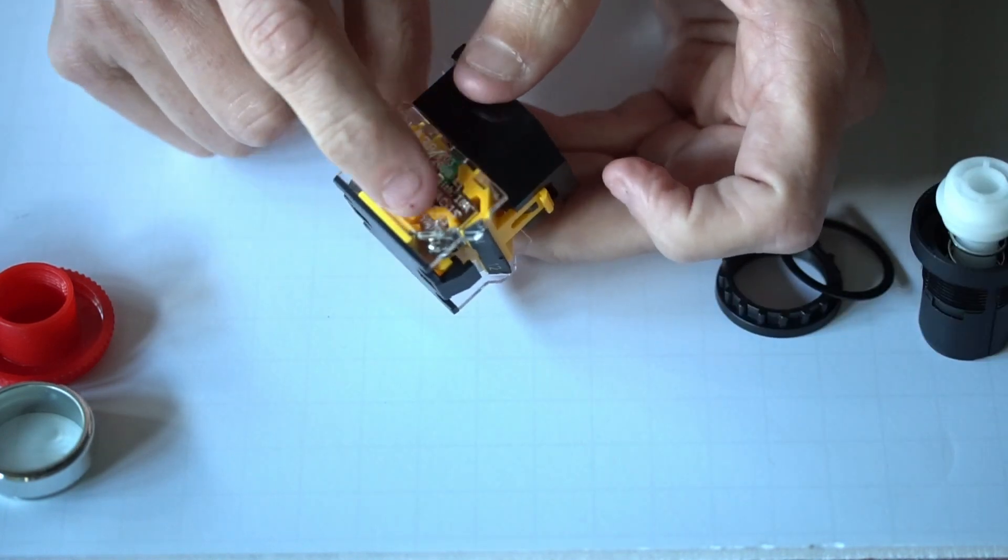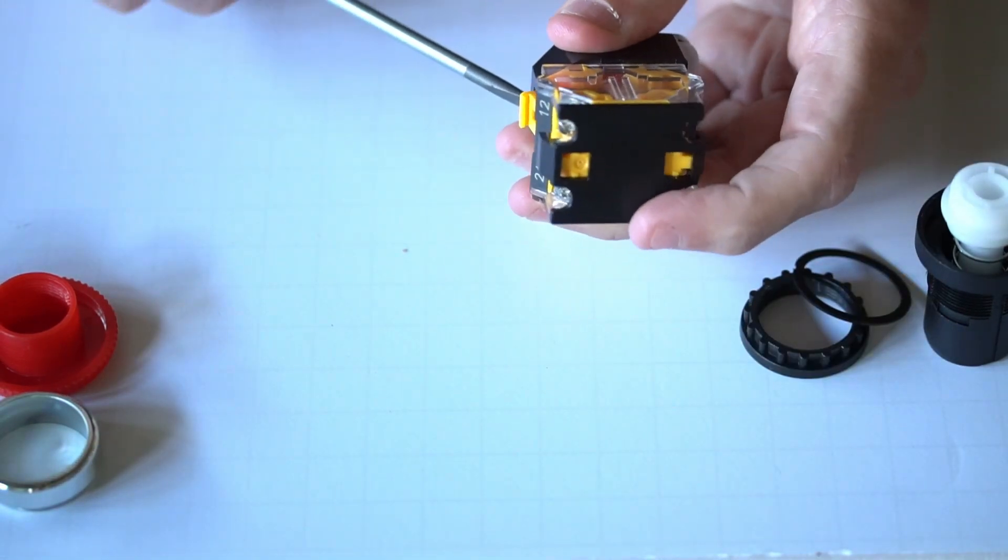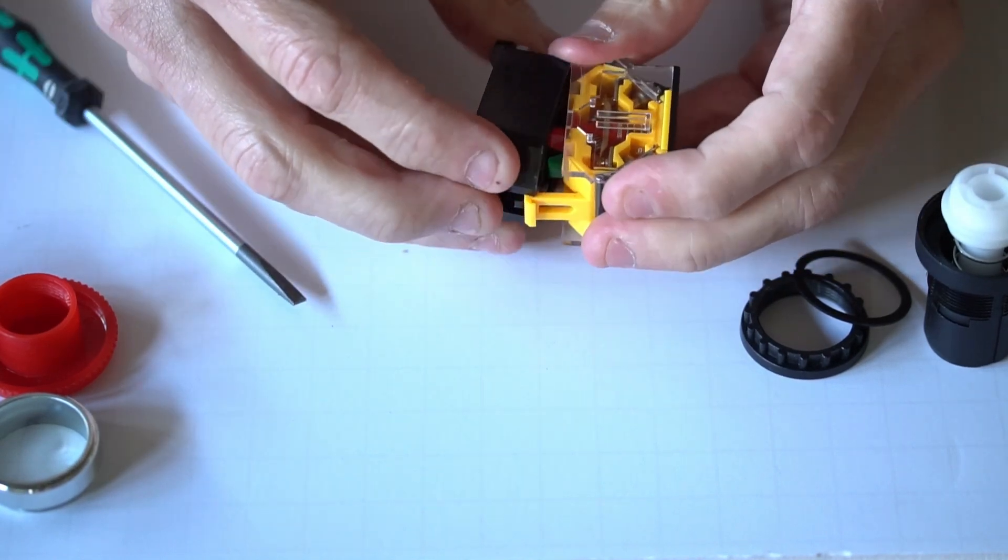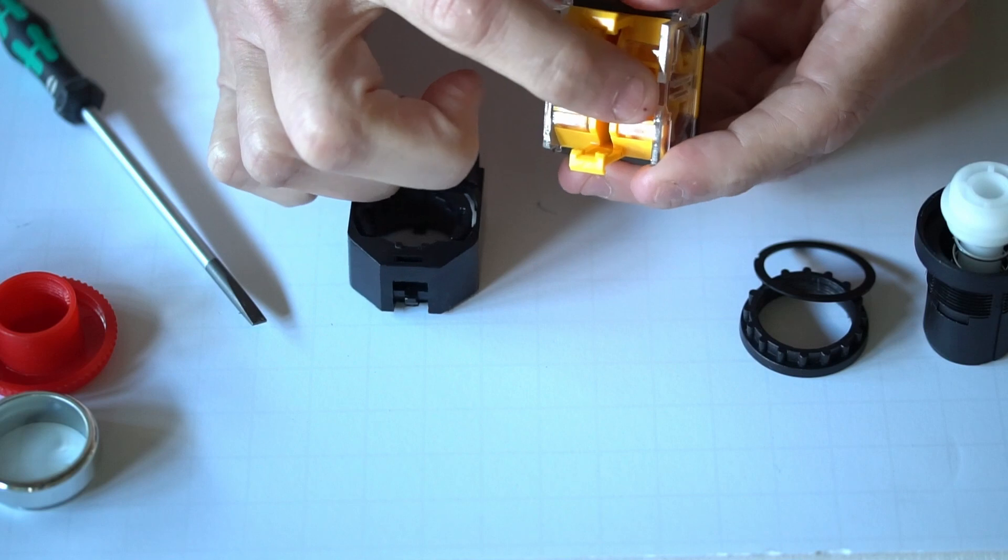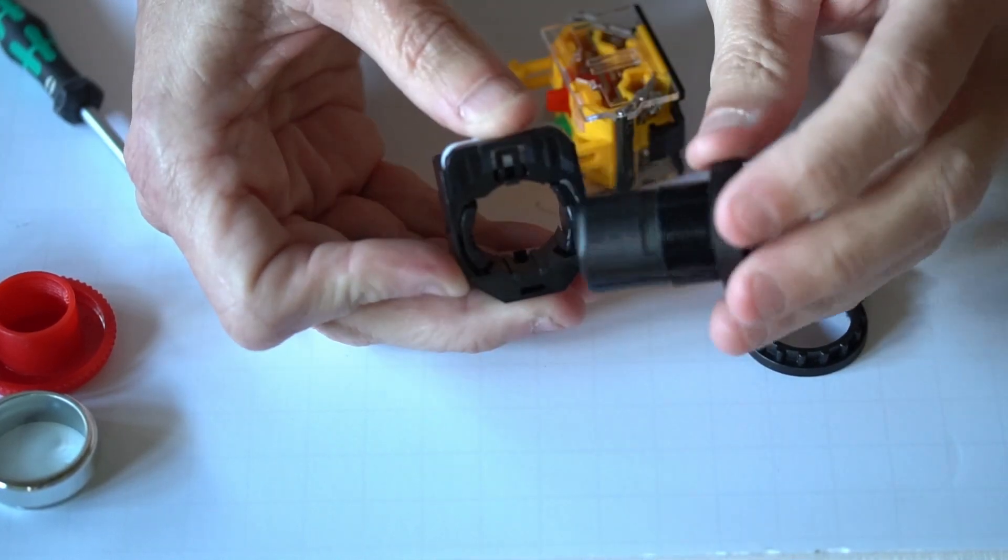You can remove this lower portion if you want by opening up this plastic piece here and then taking it all the way off. You can see inside here is the release for this portion.